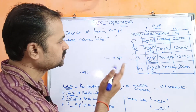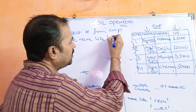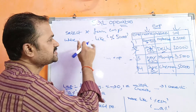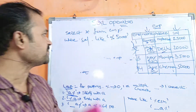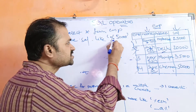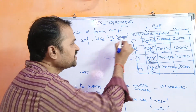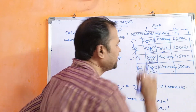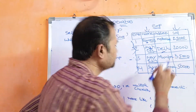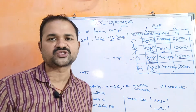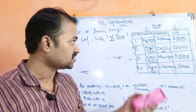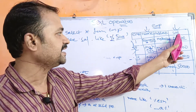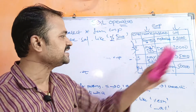Let us take one more condition. Using '%5000' on the salary column: SELECT * FROM EMP WHERE salary LIKE '%5000'. Percentage means any number of characters, but it should end with 5000. So 25,000 ends with 5000, and 35,000 also ends with 5000. So the first record and the third record will be displayed.